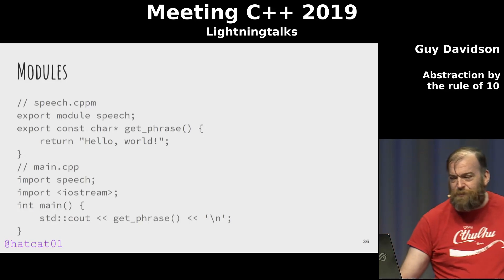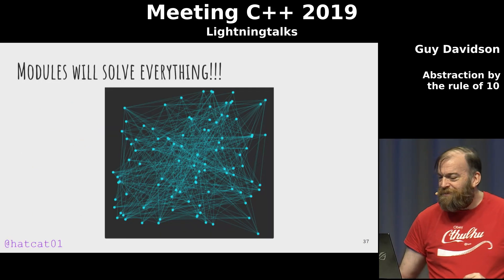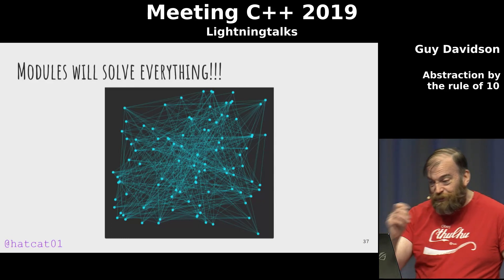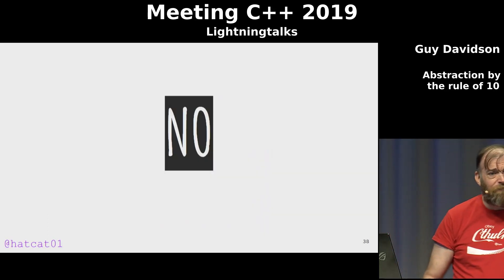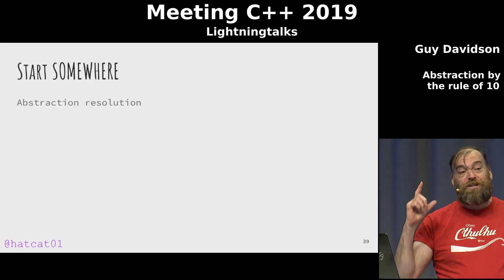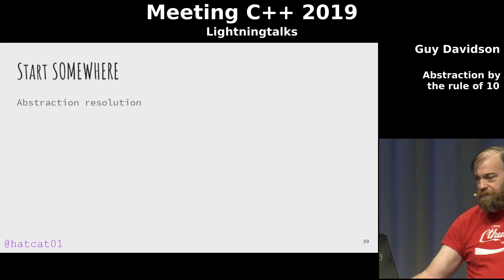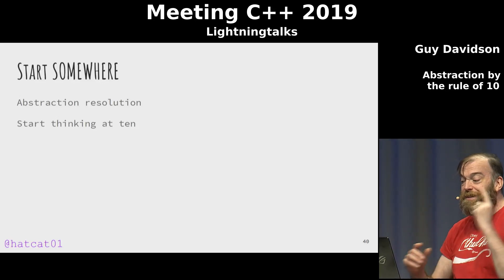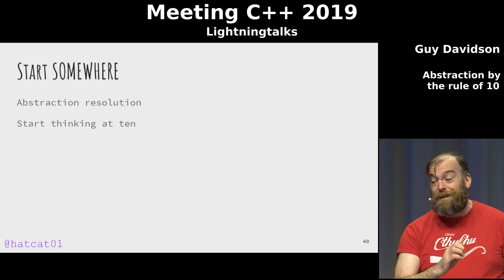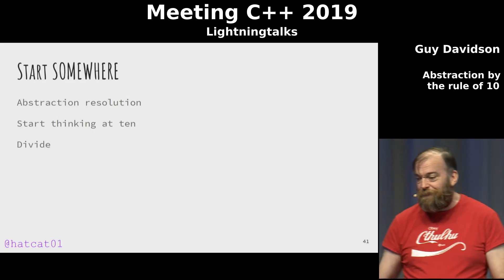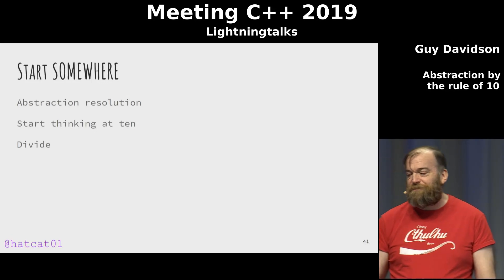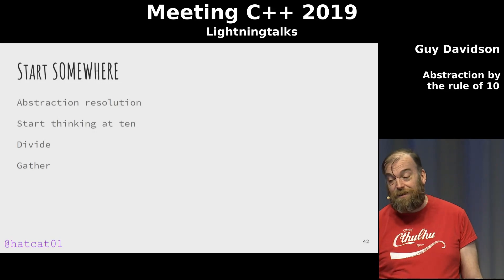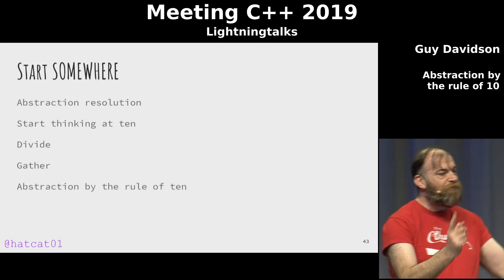So am I saying that modules should contain no more than 10 classes? Classes no more than 10 member functions and 10 member data? Functions no more than 10 lines and 10 objects? No. But what I am saying is: at some point you need to start thinking about increasing the resolution of your abstraction, and that point is when you have 10 things to think about. The number of things is not directly related to comprehensibility, but it is a contributing factor that is easy to measure simply by counting. 10 variables in your function — divide it into two, or group your data into a class. 10 functions in your class — divide it into two classes. 10 classes — use a namespace or better still a module to identify a blob of functionality. And that is abstraction by the rule of 10. Thank you.